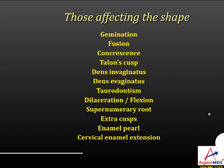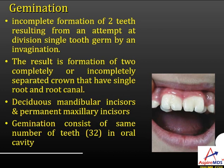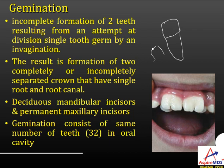Developmental disturbances affecting shape include gemination, fusion, concrescence, talon's cusp, dens invaginatus, dens evaginatus, taurodontism, dilaceration, supernumerary roots, extra cusp, enamel pearl, and cervical enamel extension. Gemination is incomplete formation of two teeth resulting from an attempt at division of a single tooth germ by invagination. This results in two completely or incompletely separated crowns sharing a single root and single canal.